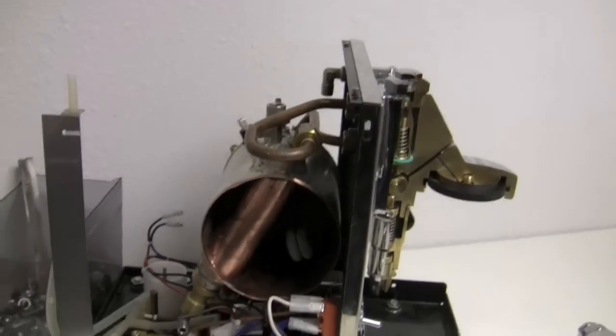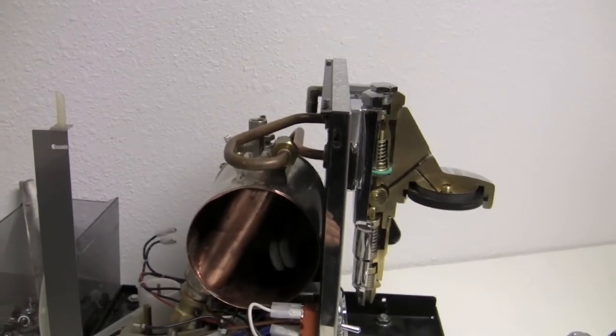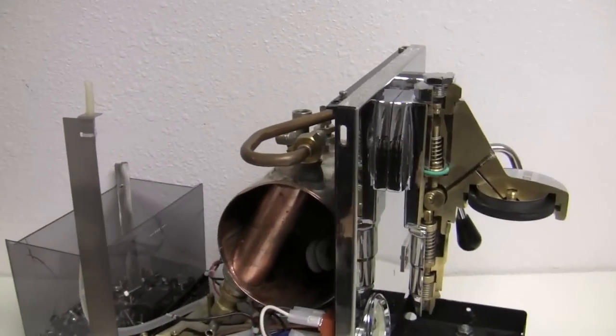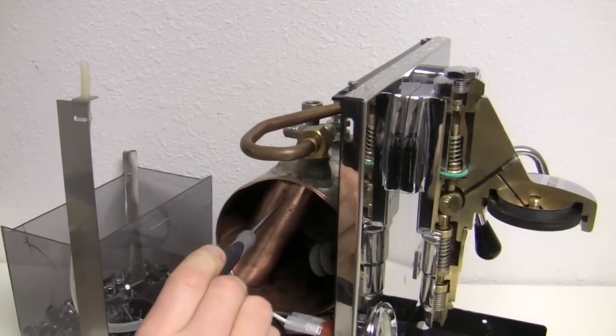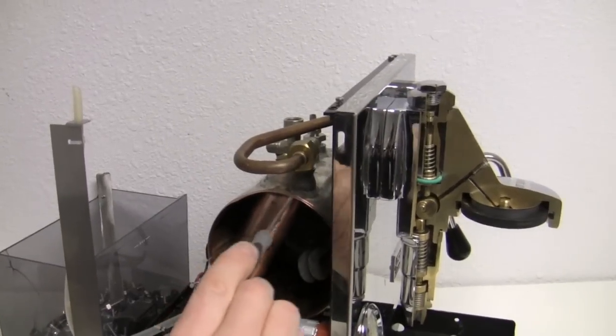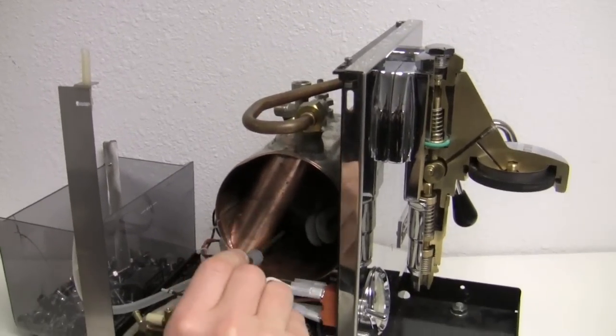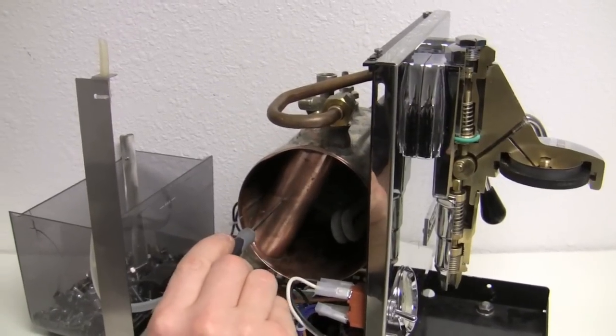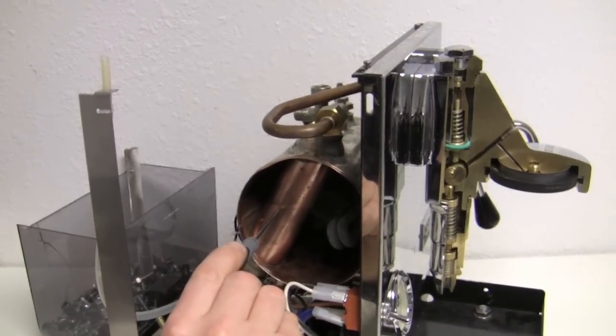So inside an E61, in this particular one we have a heat exchanger model, which means there's two boilers, it's a dual boiler, but one boiler is inside the other one and it exchanges heat with the steam boiler to the brew boiler. That's why we call it a heat exchanger.